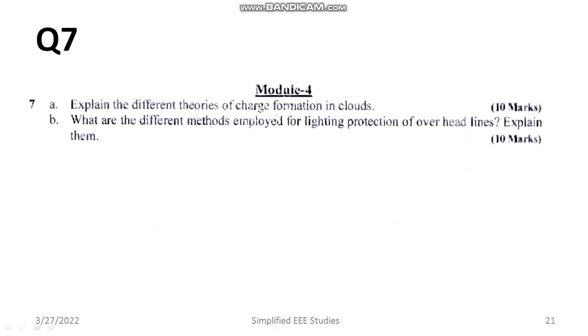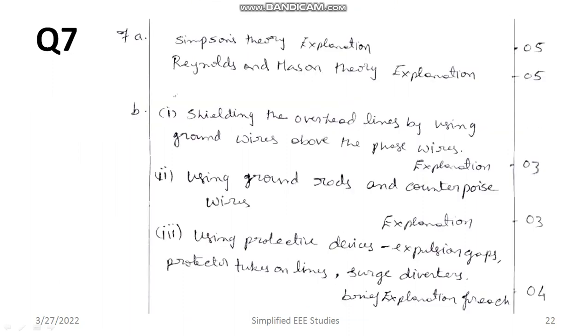What are the different methods employed for lightning protection of overhead lines? First of all you have to specify the methods very clearly, specify and underline and you can confirm the marks. Like shielding the overhead lines by using ground wires above the phase wires, using the ground rods and counterpoise wires, using the protective devices, expulsion gap. Likewise you can mention. Surge diverters. Each is having certain weightage.